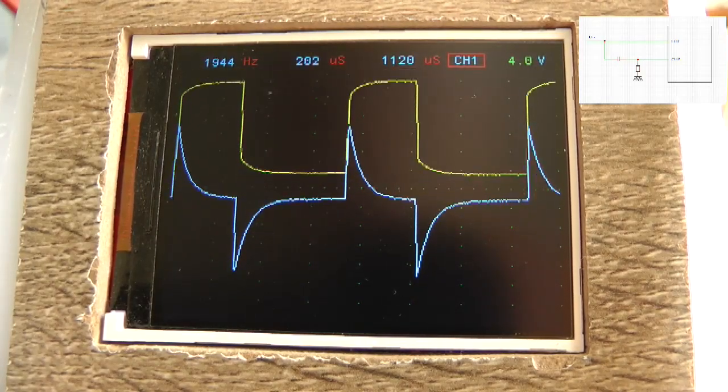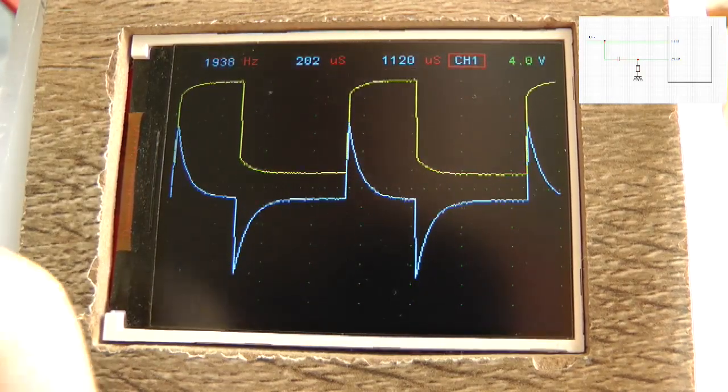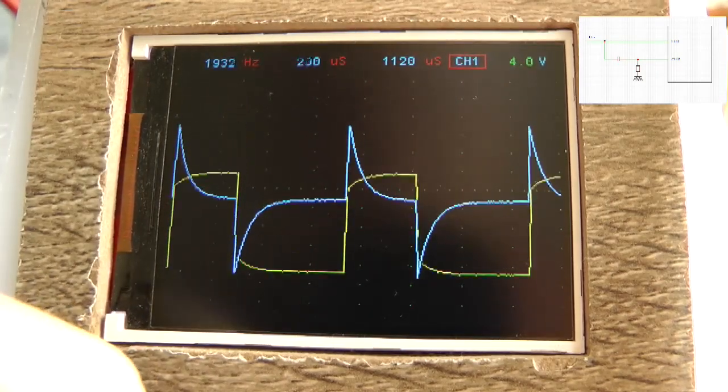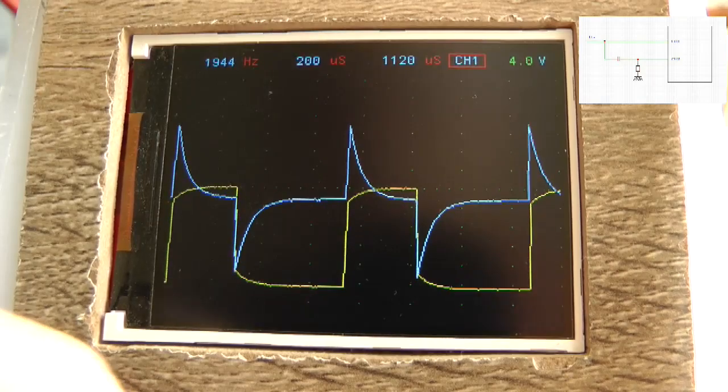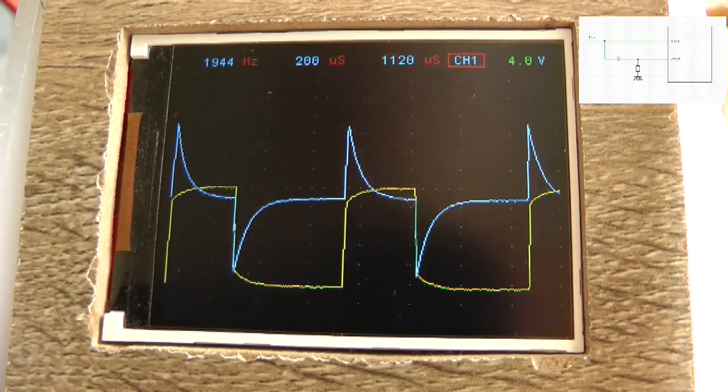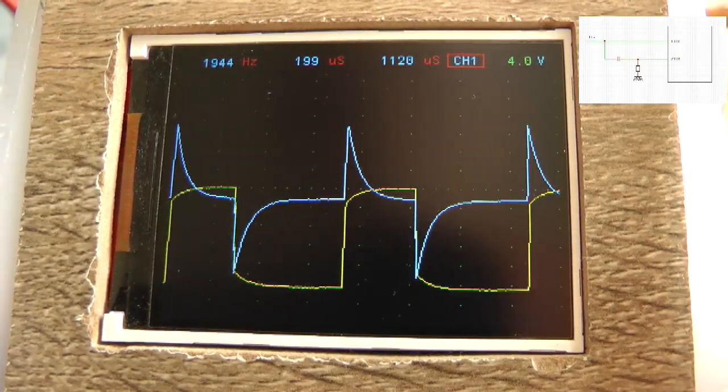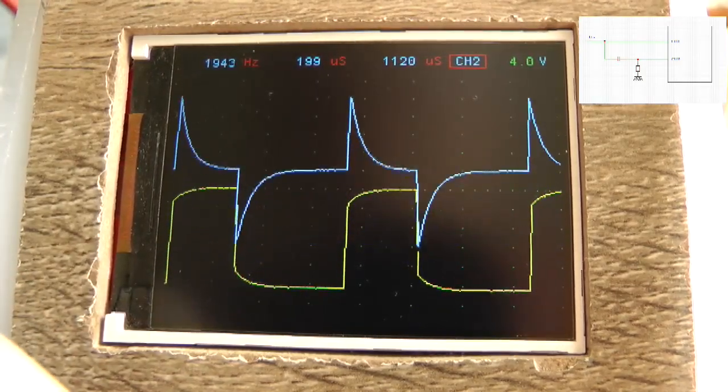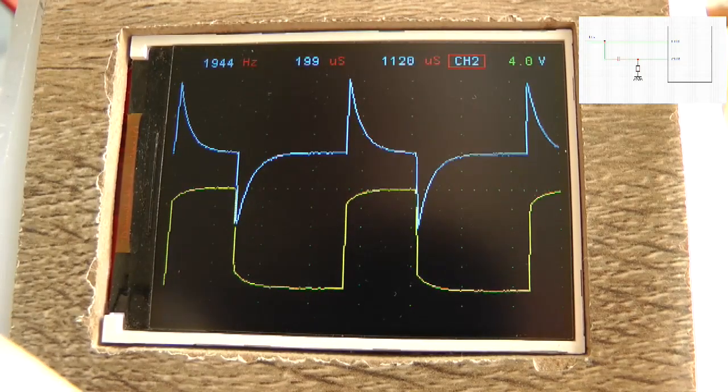Now channel 1, we can do zero line shift as I call it, so we can change position of the graph in vertical scale. Channel 2 shifting.